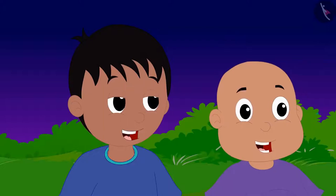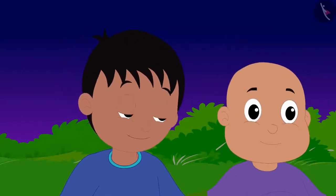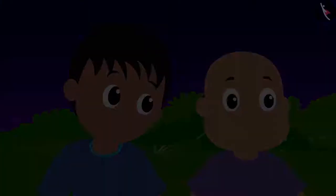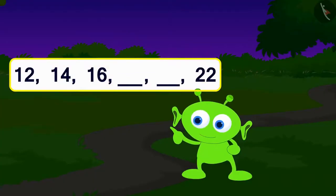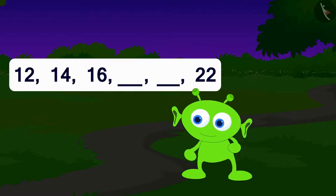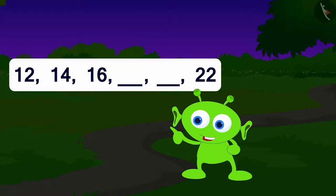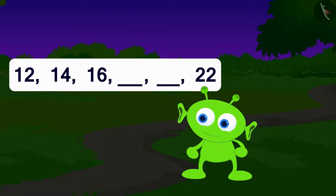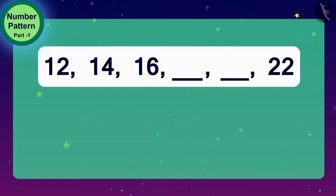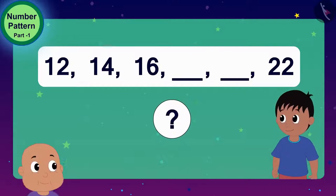Now Raju and Bablu accepted the condition of the alien. Look, even numbers. Hey, but there are some numbers missing here. Can you find these numbers? This is your first puzzle, the alien told Raju and Bablu. Children, can you help Raju and Bablu in filling the blanks?